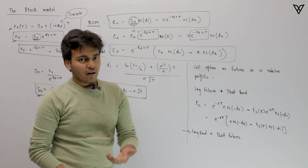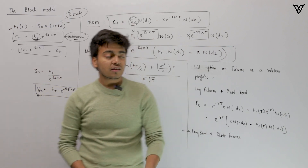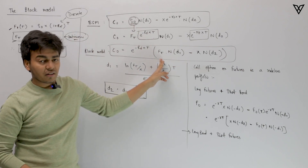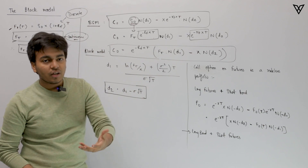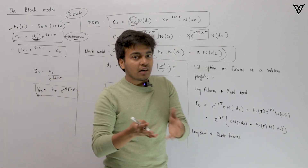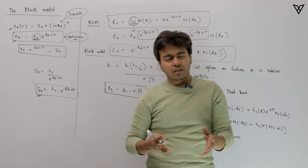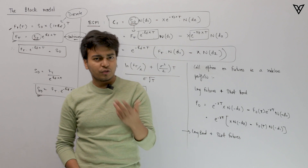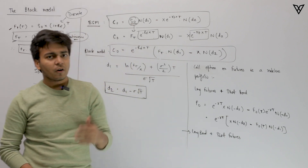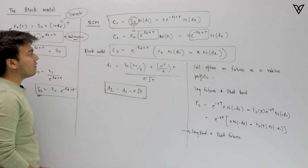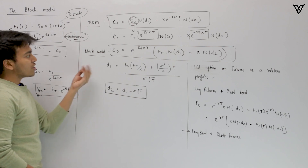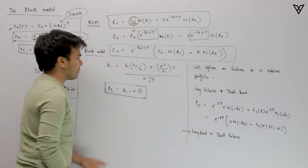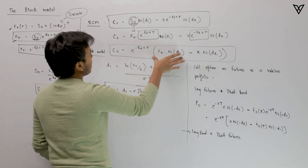The Black model smartly replaces the spot price with the forward or futures price, deriving a call option value when the underlying is a futures or forward contract. There is one key assumption: we ignore the mark-to-market concept of the futures contract. Setting that aside, we can derive the value or price of the call option using this equation.